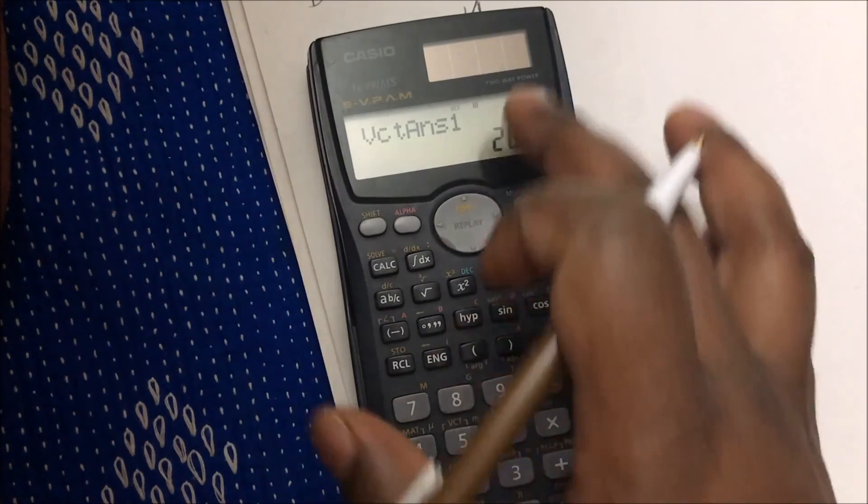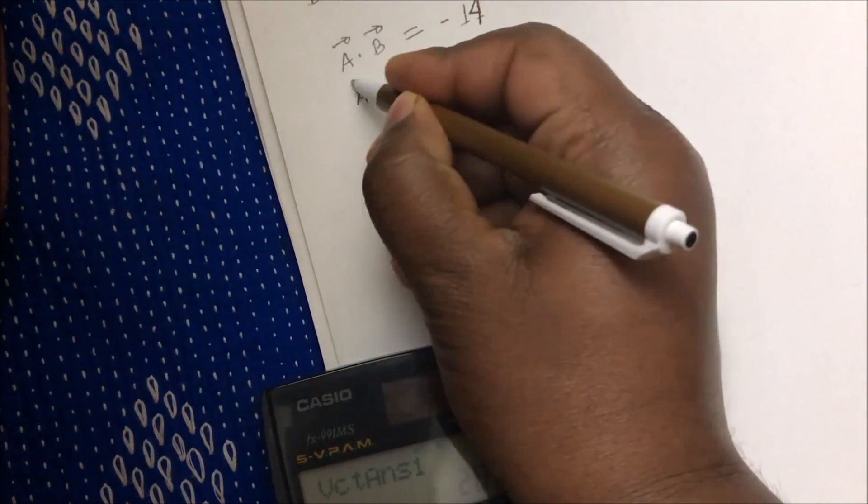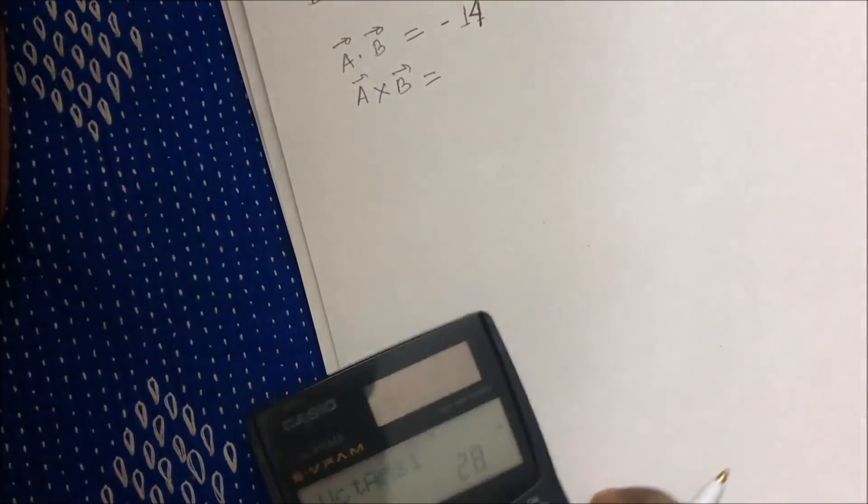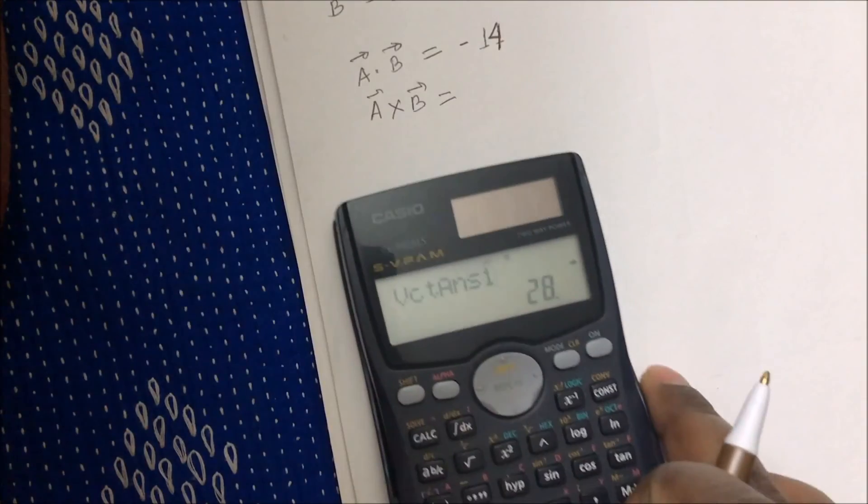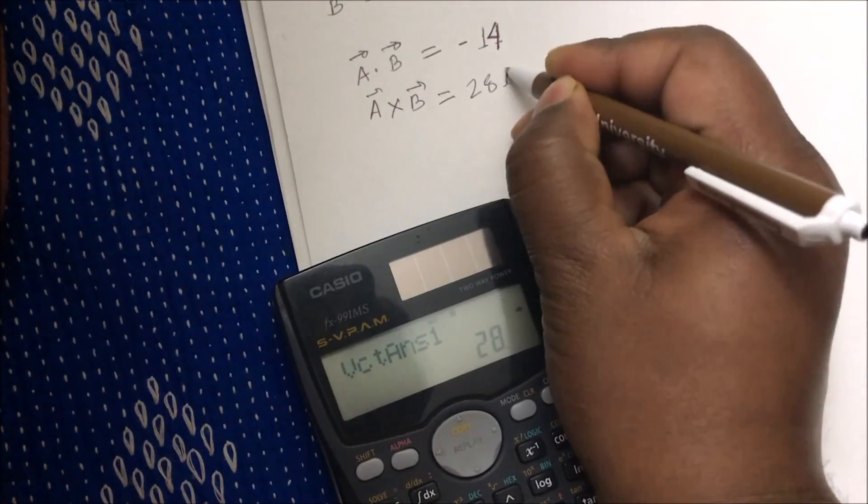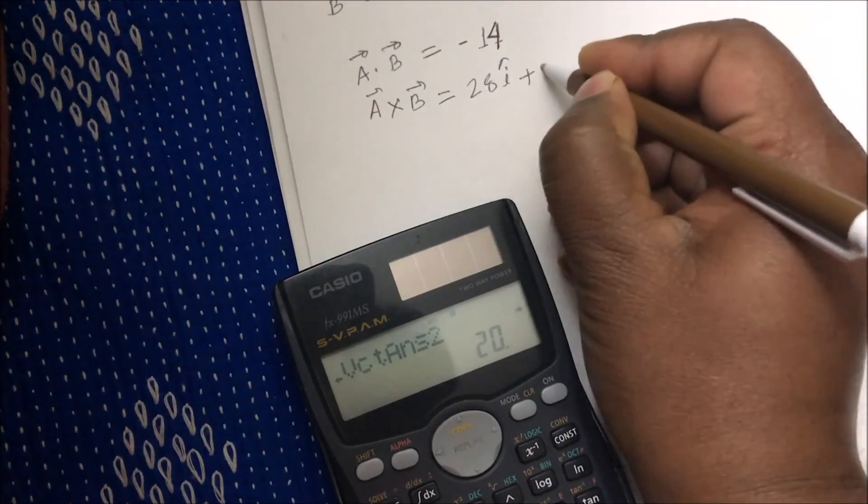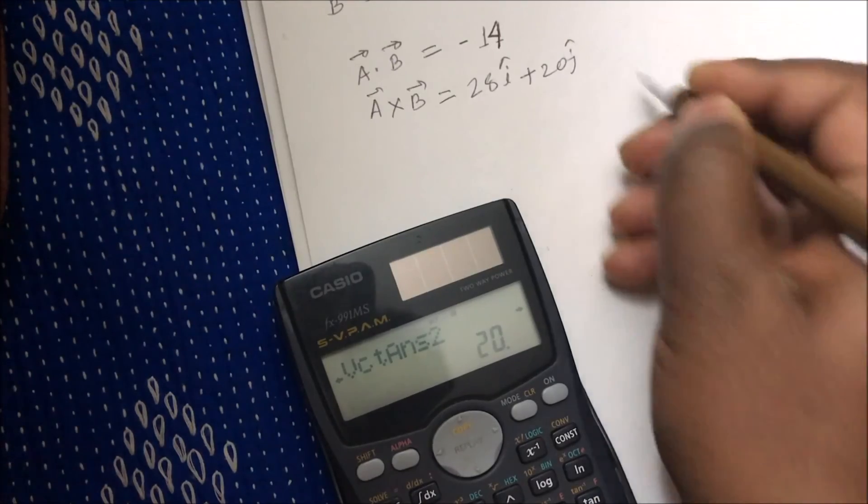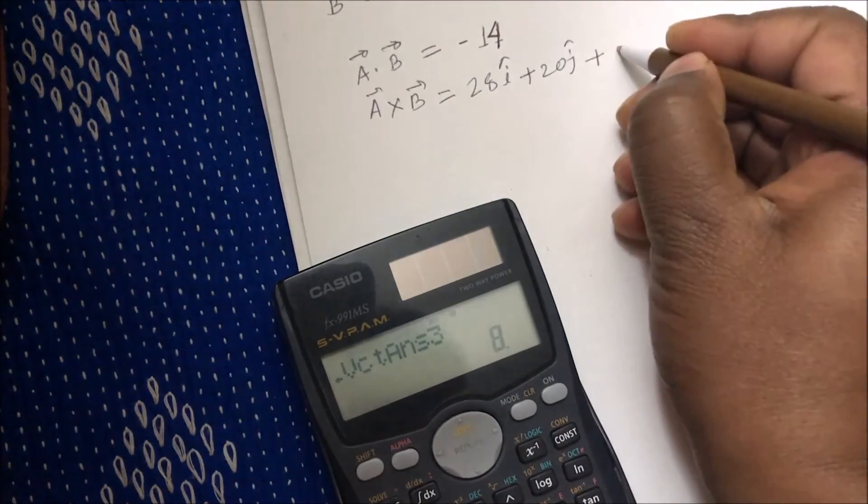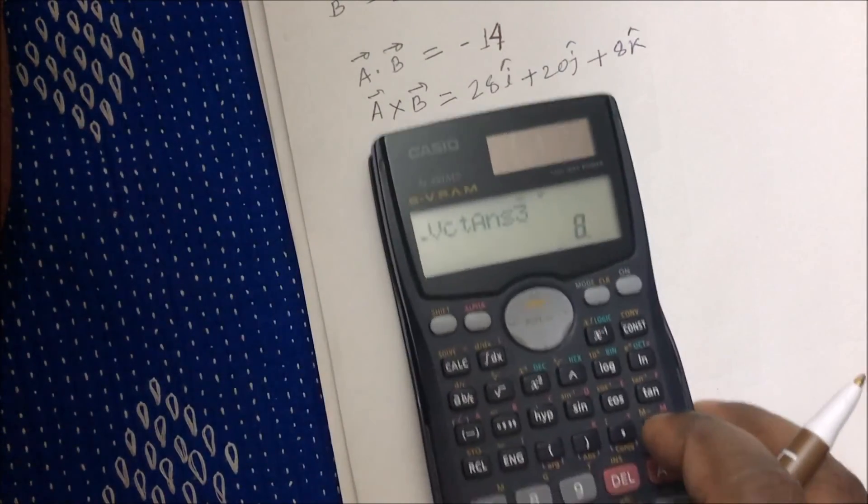As you know, the vector cross product is another vector, so it's giving me three values. And to get these three values, the coefficients of i, j, and k - so my cross product A cross B is basically 28i, then 22j, and 13k. Okay, so that's how we have to do the vector dot and cross product in a calculator.